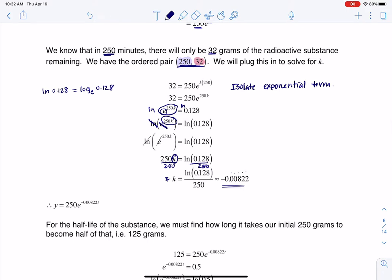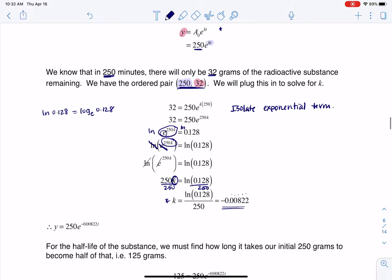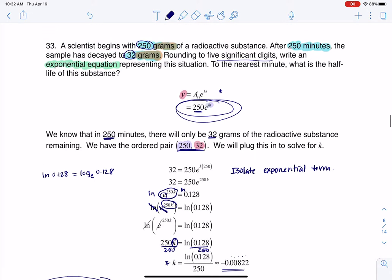And then I'm going to go ahead and plug that into my exponential model, because here was our exponential model up here. We needed to find K. Well, now I know K. It's negative 0.00822. So we've got that. That's the exponential model.